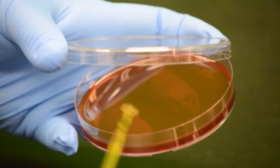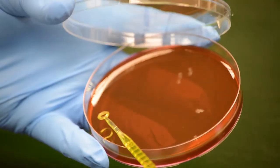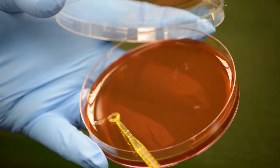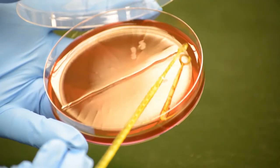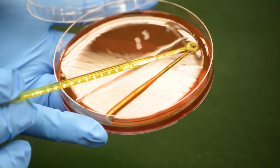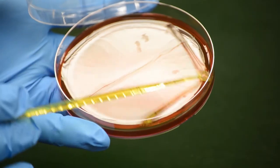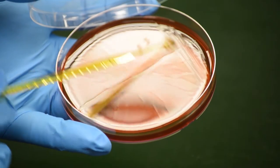The lid of the plate is opened and a vertical streak is made down the center of the plate. The loop should be touching flat on the agar so that a maximum of the fluid is transferred.